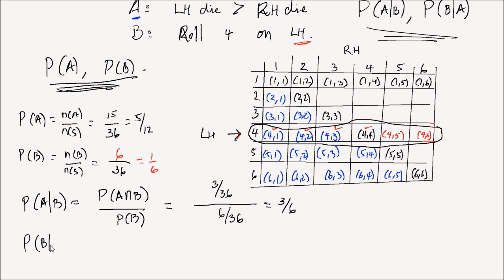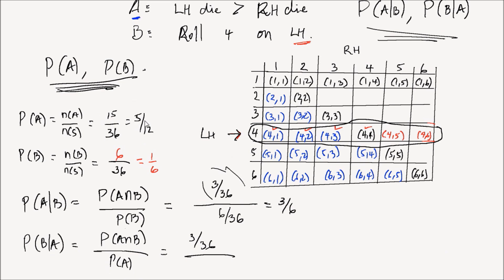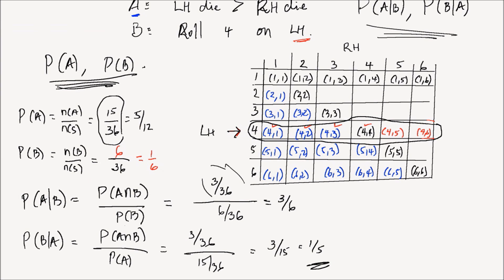What is P(B|A)? P(B|A) = P(A intersection B) divided by P(A). P(A intersection B) is 3/36 and P(A) is 5/12 or 15/36. Therefore you have 3/15 = 1/5. Intuitively, of the 15 elements in event A, only three of them — (4,1), (4,2), and (4,3) — also satisfy event B. So the answer is 3 out of 15, which is 1/5.